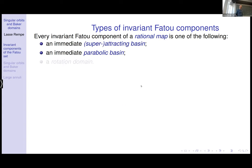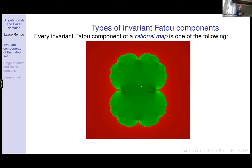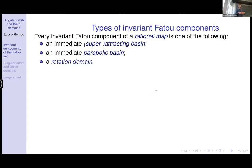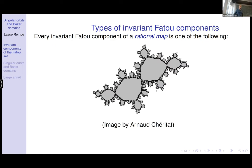We could have an immediate parabolic basin — similar, but with a parabolic fixed point of multiplier one, where points in the basin converge to this point on the boundary, which itself lies in the Julia set. The famous example is z + z² or z² + 1/4. Finally, we can have a rotation domain: a simply connected or doubly connected region on which the map is conjugate to an irrational rotation. The doubly connected case is called a Hermann ring.